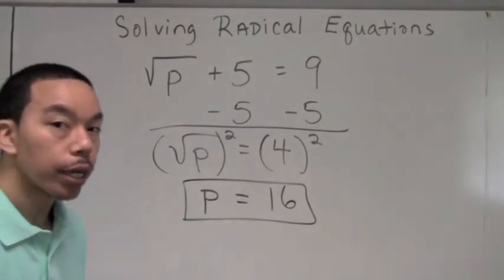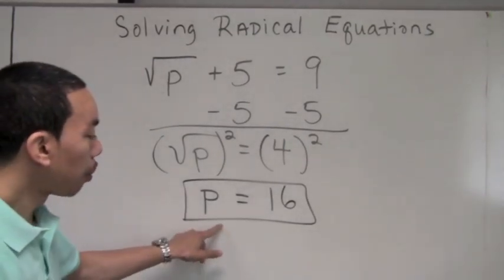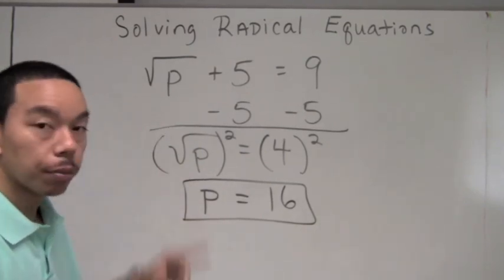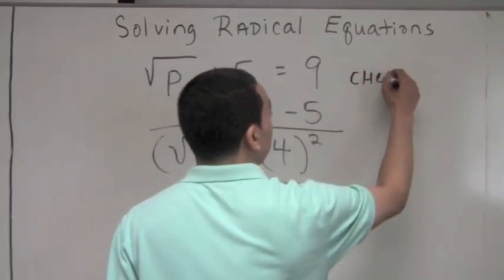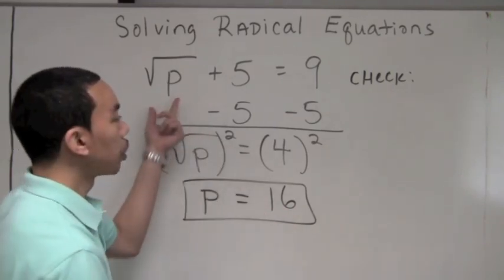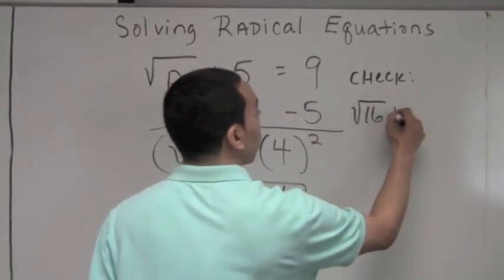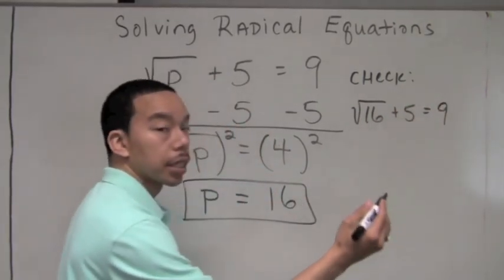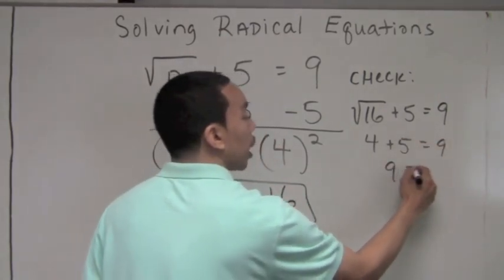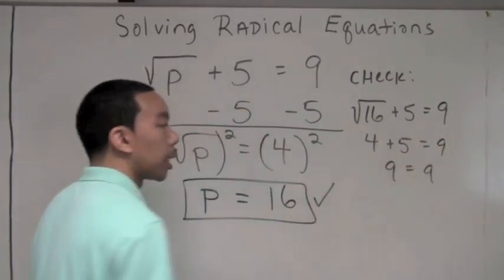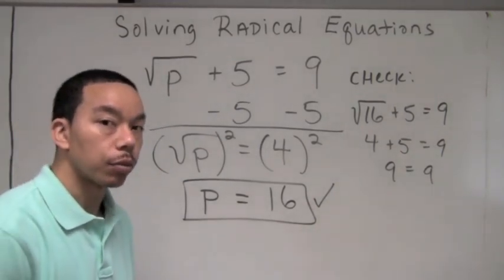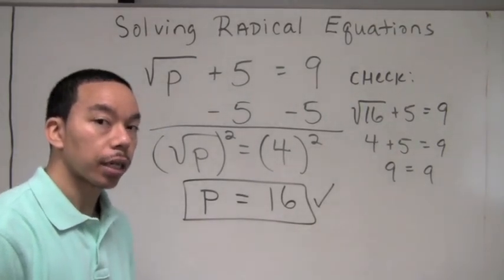However, with radical equations you must check your answer — it just may not be correct. We check by inputting 16 back into the original: the square root of 16 plus 5 equals 9. The square root of 16 is 4, and 4 plus 5 is 9, which equals 9, so it checks out. Our answer is p equals 16. A check is a must every time we deal with radical equations.